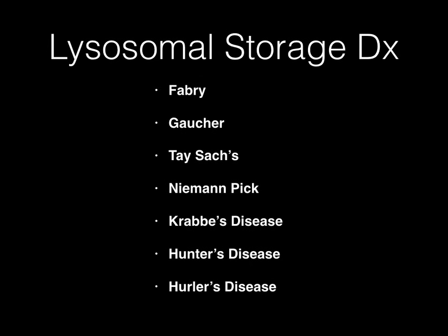Not included on this list is metachromatic leukodystrophy — it's the lowest yield of all these diseases, but you might want to add notes after this video. The diseases we're going to cover are Fabry disease, Gaucher's disease, Tay-Sachs, Niemann-Pick, Krabbe's disease, Hunter's disease, and Hurler's disease. I'll dedicate one slide to each, covering the deficient enzyme, the accumulating substrate, and one mnemonic sentence that will give you everything you need on test day.